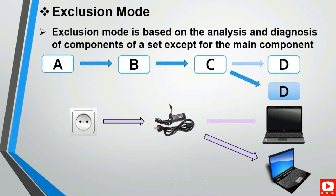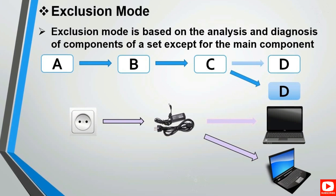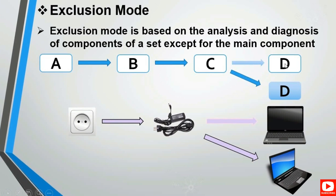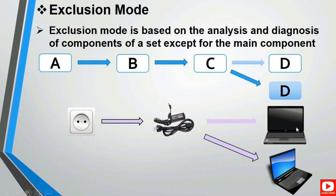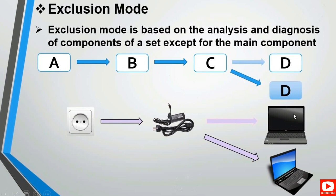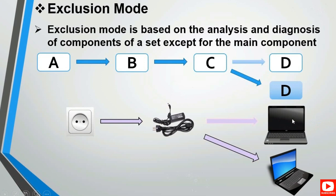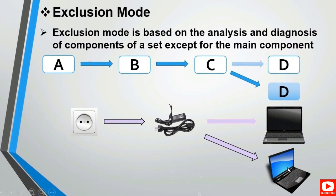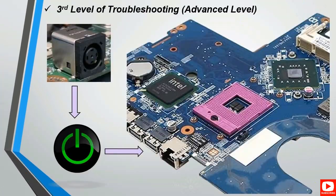Exclusion mode is based on the analysis and diagnosis of all components in a set except for the main component. Here we have A, B, C, D, and D is always the workstation or major component — the laptop. In exclusion mode we do not focus on the laptop; instead we replace it with another laptop and focus on troubleshooting all other components such as the plug and adapters.